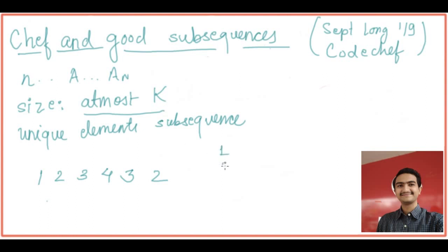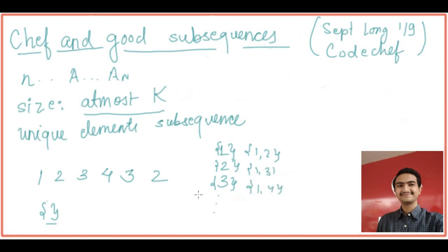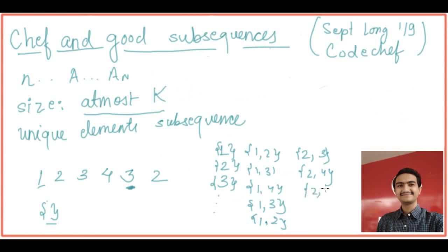An empty subsequence is also unique, so it is also a good subsequence. All subsequences with one element are unique. Then one-two, one-three, one-four, and then one-three may come two or three times depending on the position of three. But something like two-two is not a good subsequence because two is repeated.